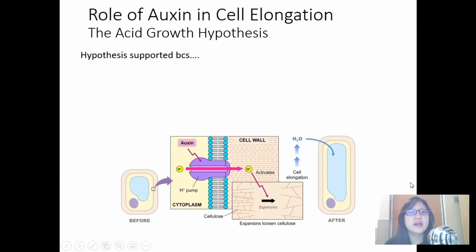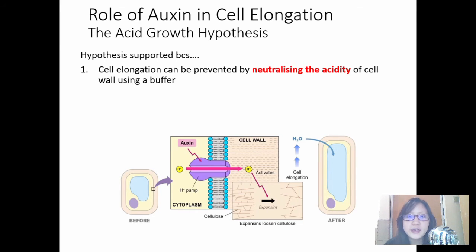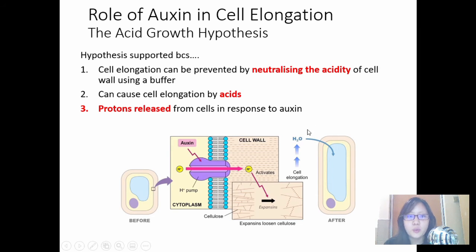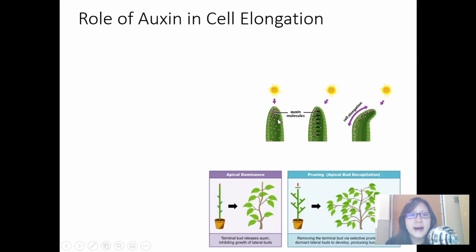The acid growth hypothesis is supported by experiments. Cell elongation can be prevented by neutralizing the acidity of the cell wall using a buffer — making it less acidic stops cell elongation. Conversely, if you experimentally introduce an acid into the cell wall, you can also cause cell elongation. Scientists have also confirmed that protons are indeed released from cells in response to auxin.